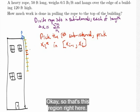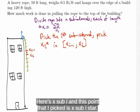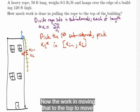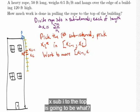So that's this region right here. Here's x sub i minus 1. Here's x sub i. And this point that I picked is x sub i star. Now, the work in moving that to the top, to move that section x sub i minus 1 to x sub i to the top is going to be what? I'll call it w sub i.